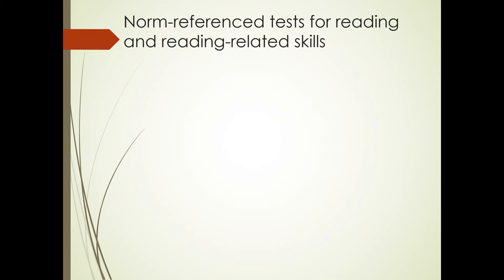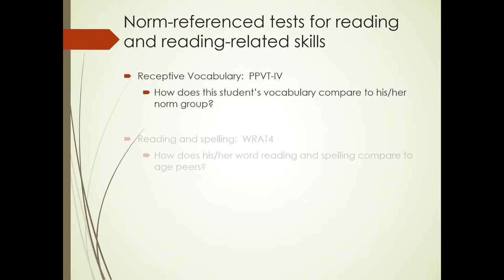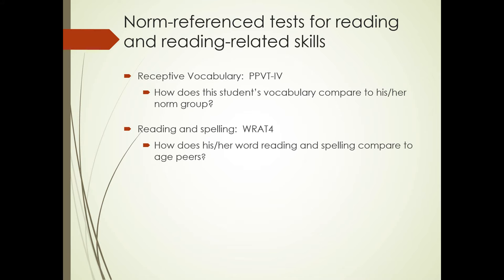So now let's look at norm reference tests for reading and reading-related skills. The receptive vocabulary test, the PPVT-4, will answer the question, how does this student's receptive vocabulary, understanding of spoken words, compare to his or her norm group? The RAT-4 will answer the question, how does his or her word reading and spelling compare to age peers?